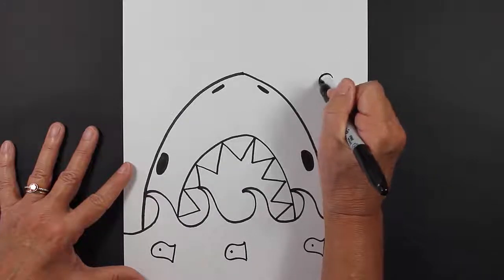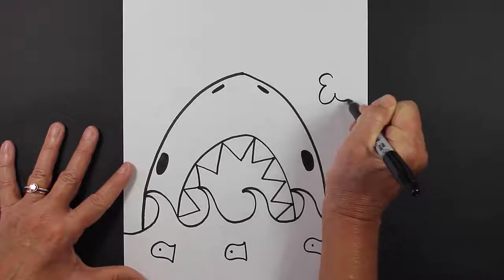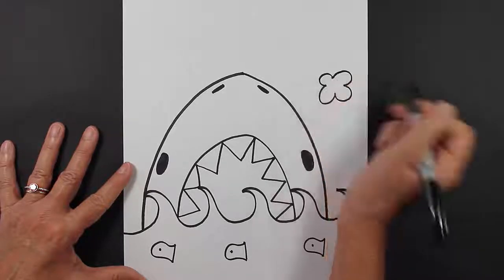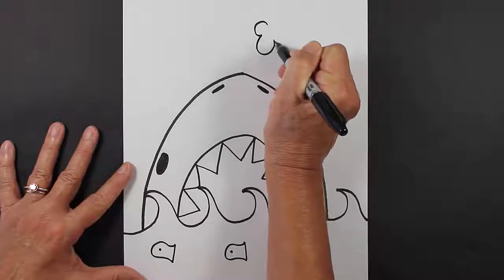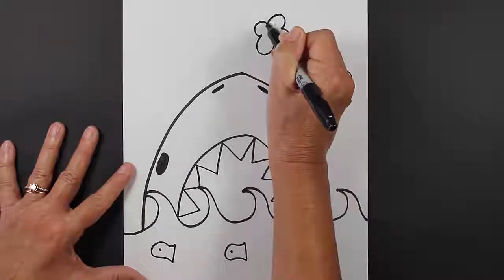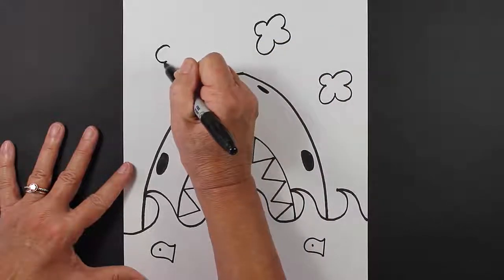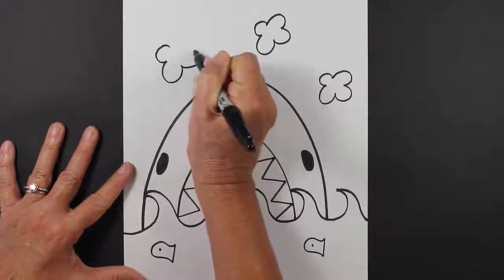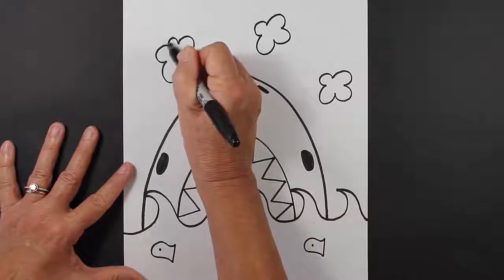And then I think what I'm going to do is I'm just going to make some very simple fluffy clouds to represent clouds in the sky over the ocean. Just like that.